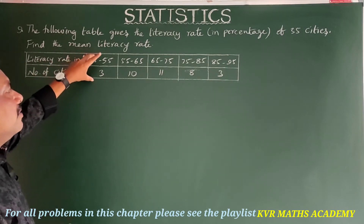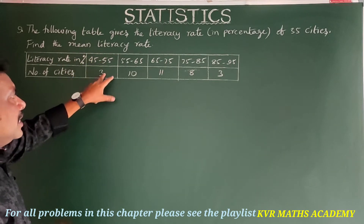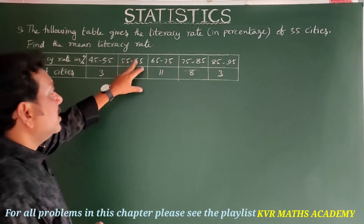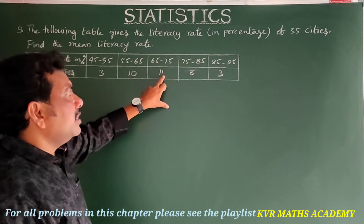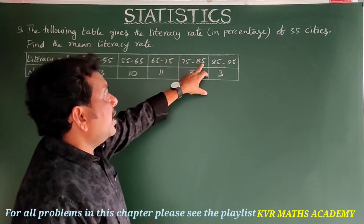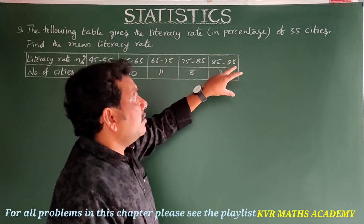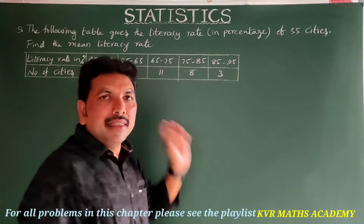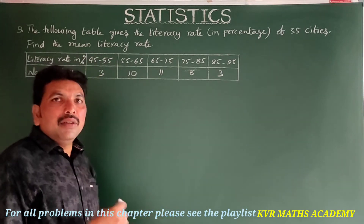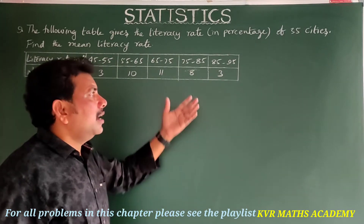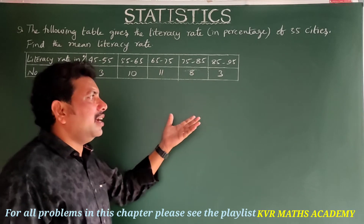The literacy rate in percent and number of cities as given in the table: 45–55 is 3 cities, 55–65 is 10 cities, 65–75 is 11 cities, 75–85 is 8 cities, and 85–95 is 3 cities. Using an appropriate method, let us find the mean literacy rate.